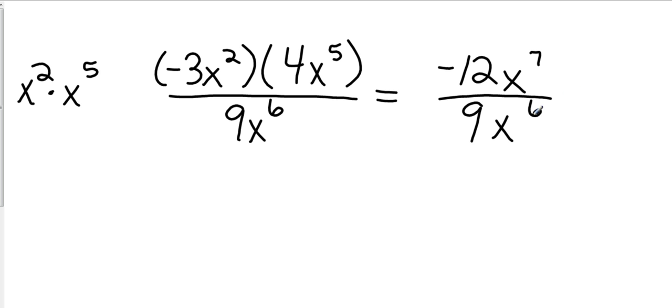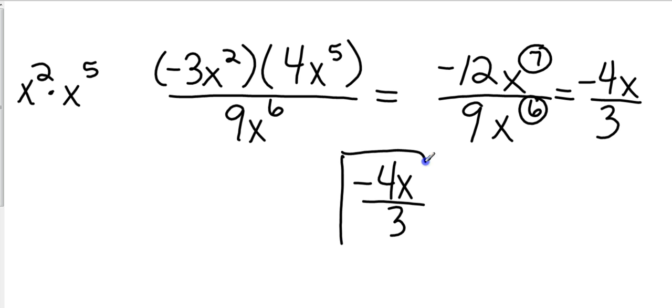Now let's take the numbers. 9 is not going to go into negative 12, but I do have a negative divided by a positive. So I know my answer is going to be negative. And now I just reduce that. 12 9ths reduced is going to be 4 over 3. And then x to the 7th divided by x to the 6th. What do we do with those exponents? In that case, we subtract, giving us just x to the 1st. So our final answer is negative 4x over 3, or negative 4 thirds x, however you would like to read it. And that's simplifying a rational expression.